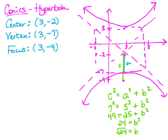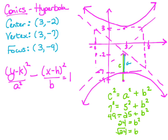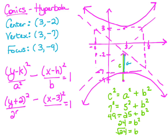The last thing we need to do is write this equation. Since it's opening up and down, the y part of the equation is the part that's going to be squared. So our equation is in the form (y minus k) squared over a squared minus (x minus h) squared over b squared equals 1 — remember, the hyperbola is the one that has the minus. My center is at (3, -2), so we have (y plus 2) squared minus (x minus 3) squared. My a value was 5, so this is over 25. The b value was the square root of 24, and squaring it gives 24. So there's our equation for this hyperbola.